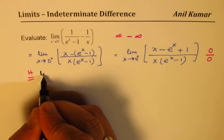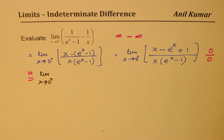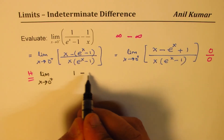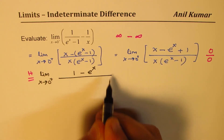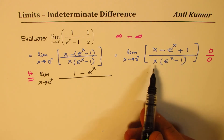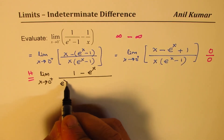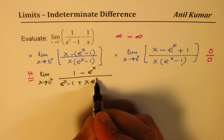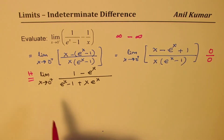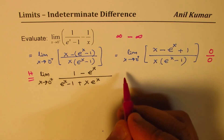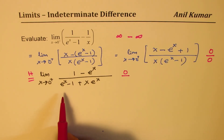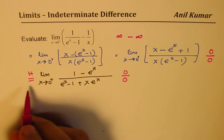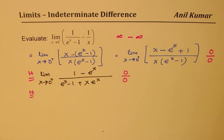Applying L'Hopital's rule: the derivative of the numerator gives 1 minus e^x. For the denominator, using the product rule, the derivative of x is 1 so we get (e^x minus 1), plus x times the derivative of (e^x minus 1) which is e^x. Substituting x = 0: the numerator gives 1 minus 1 which is 0, and the denominator gives 0 plus 0 which is also 0. So we apply L'Hopital's rule again.